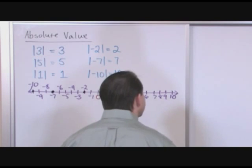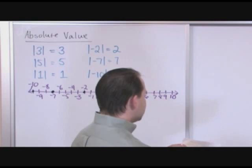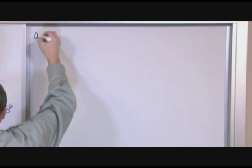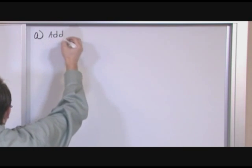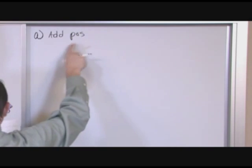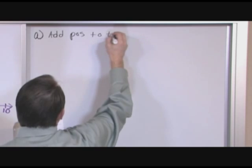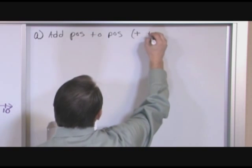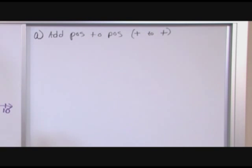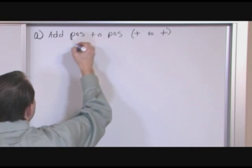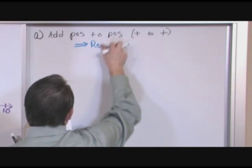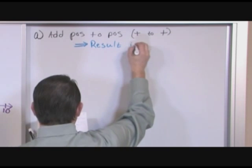The rules are basically going to look like this. Some of them are going to be trivial. The first rule: if we're adding a positive number — I'm going to use the word PLS for positive — to a positive number, in other words, positive to positive, what is going to happen? The result — these arrows indicate the result — the result of this addition is positive.